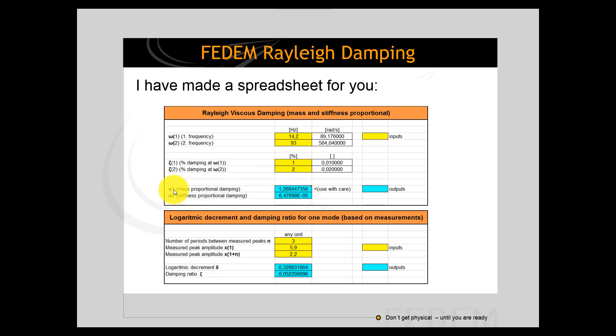But here you see that alpha 1, which is the mass proportional damping, is calculated based on these four inputs and also the stiffness proportional damping. And these are the values that you enter in the FEDEM property window for a given component.